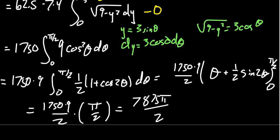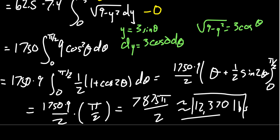In the end, that's going to give you 7875 pi over 2, which is approximately 12,370 pounds of force crushing this thing.